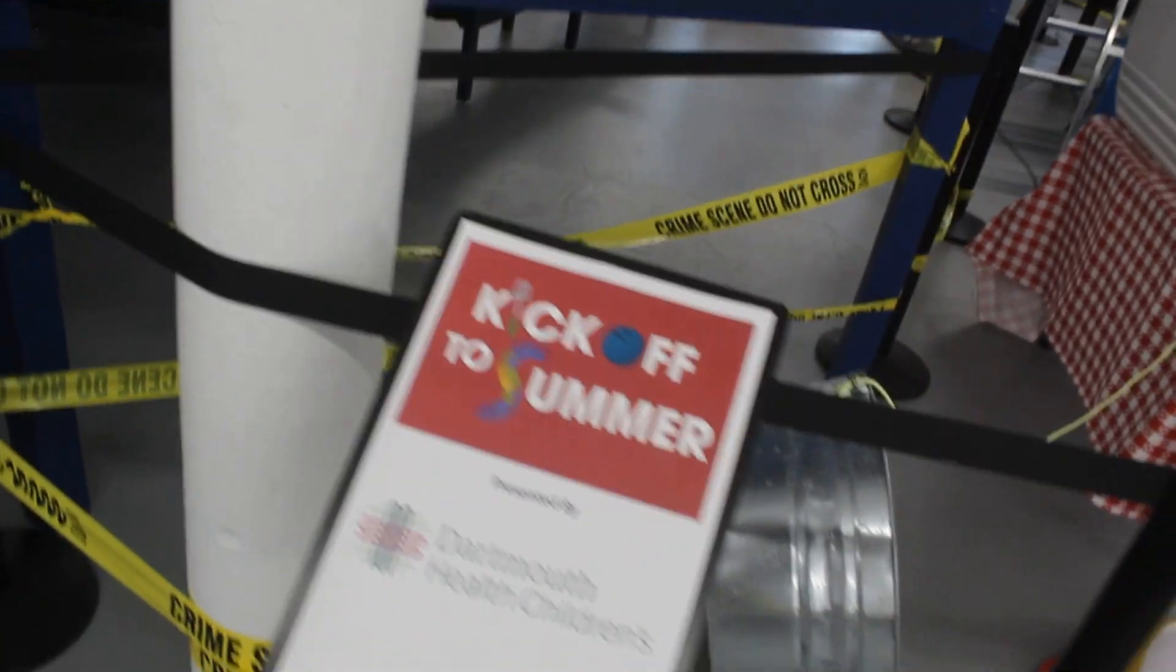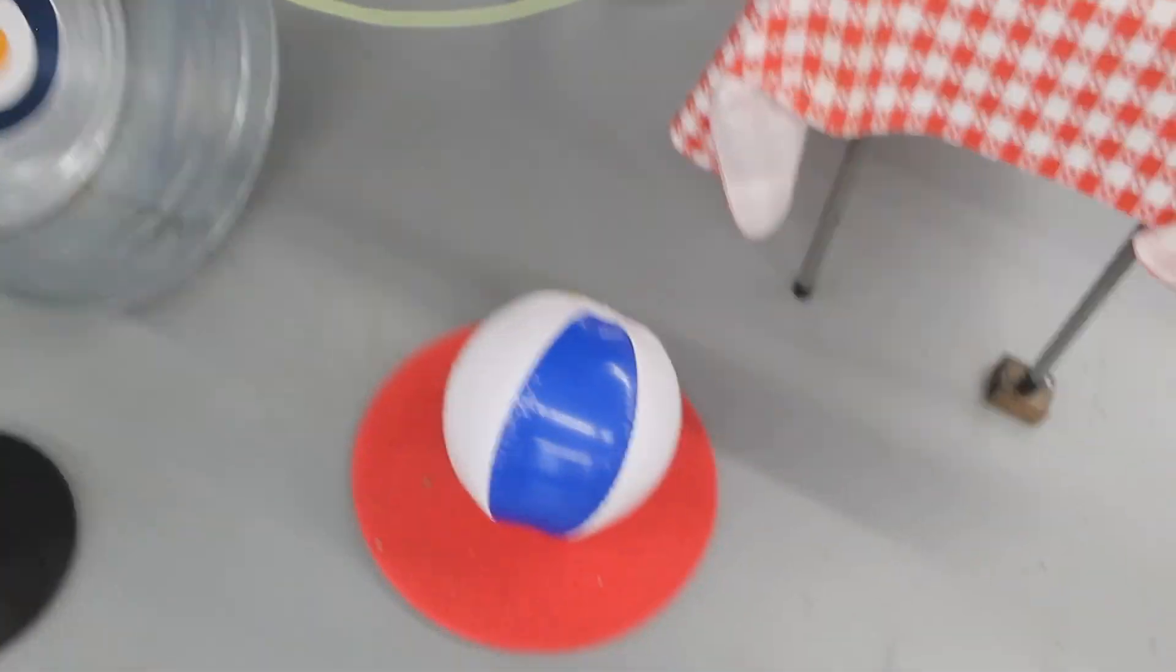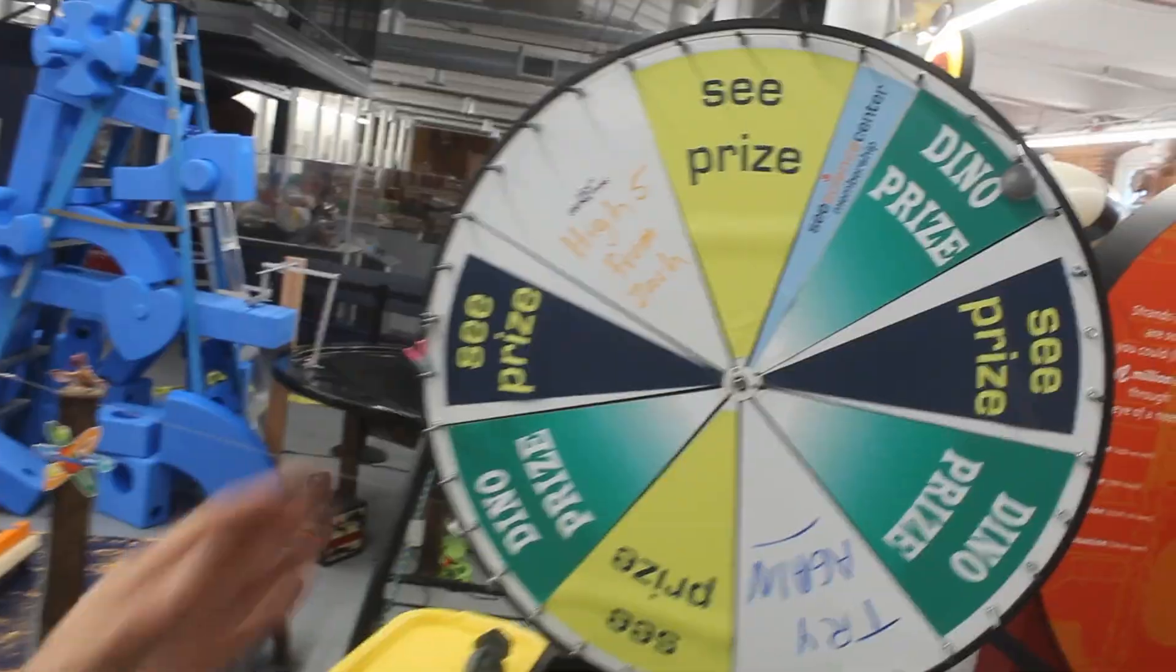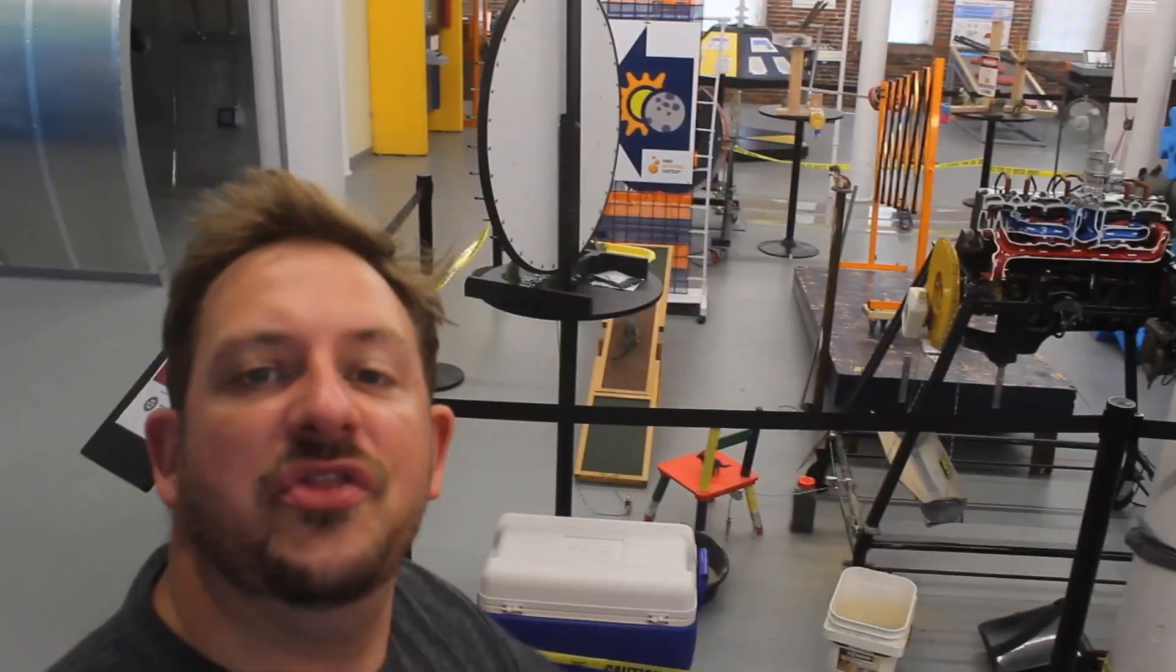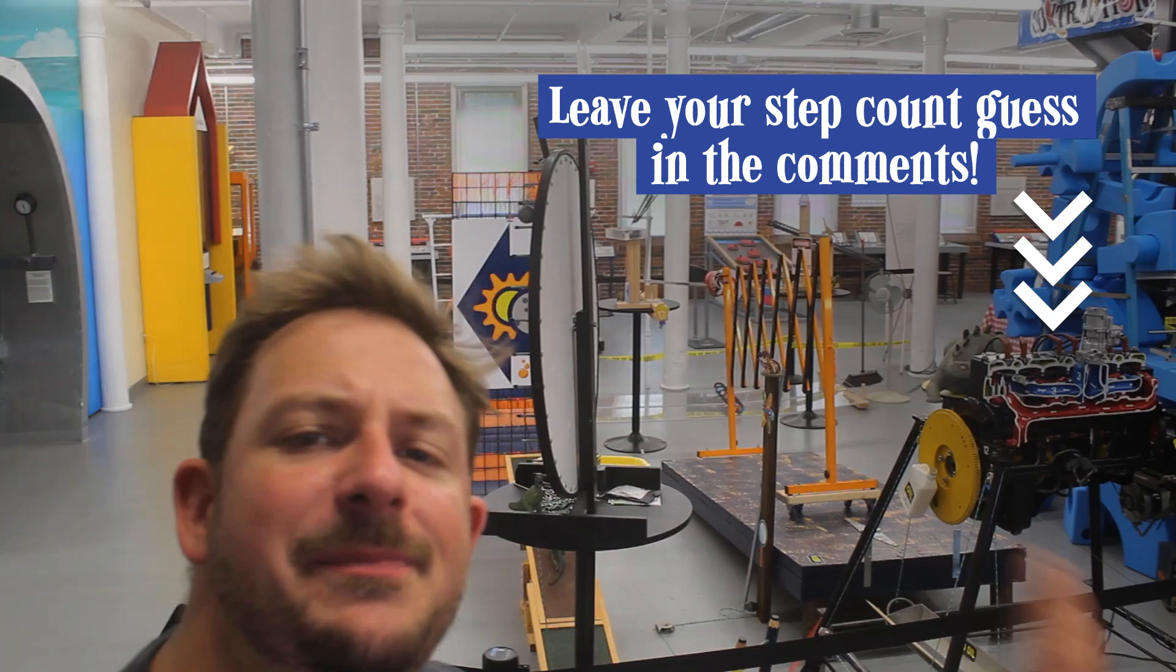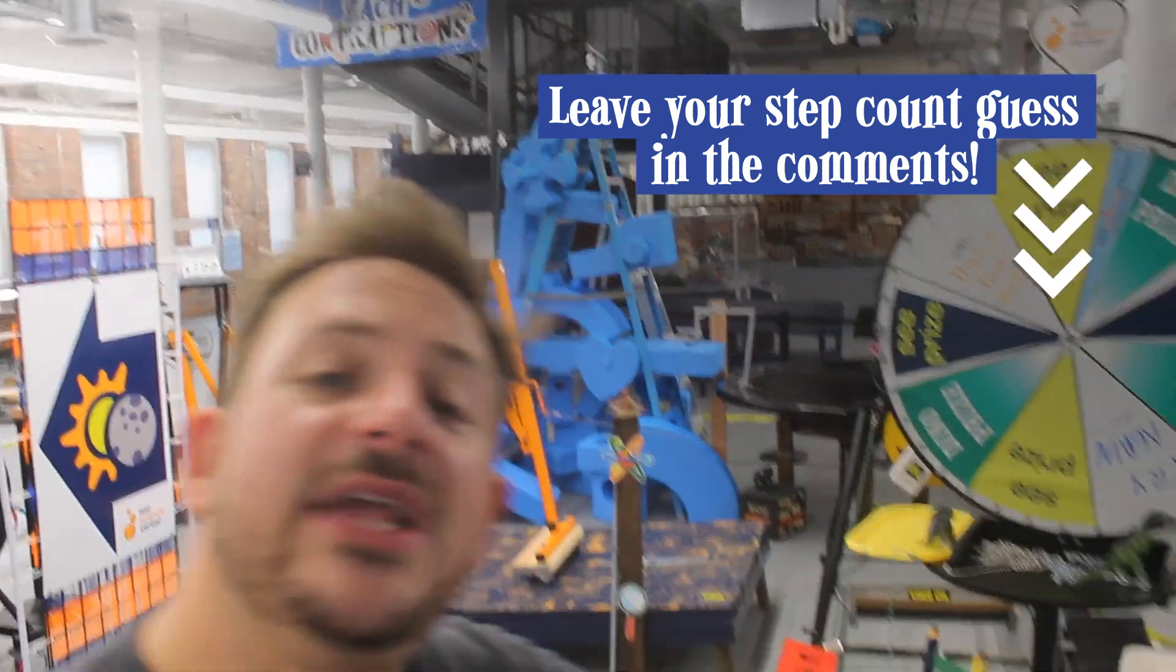The whole point of this build was for the kickoff to summer event at the Sea Science Center, and what better way than to quite literally kick the ball that's going to enter into that target and go through the entire contraption with the final step, the spinning of the prize wheel. The ultimate question, how many steps are in this machine? A step is defined as a transfer of energy from one object to the next. Leave your guess in the comments.